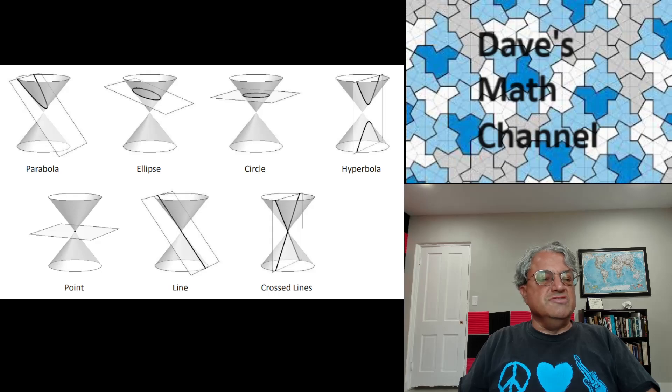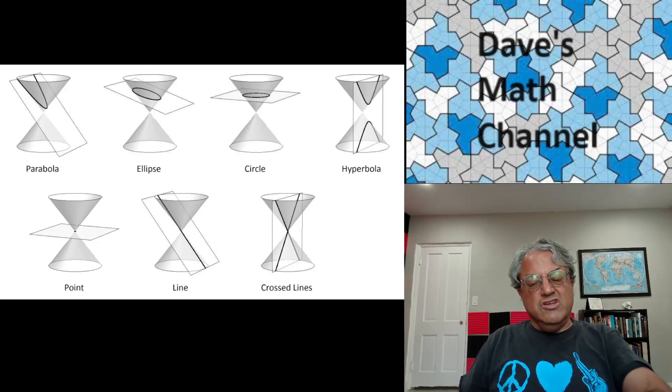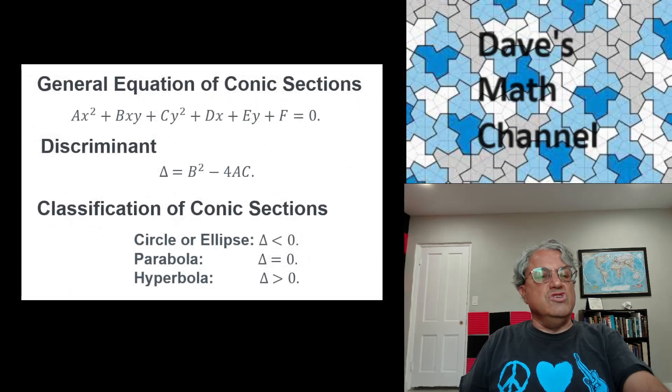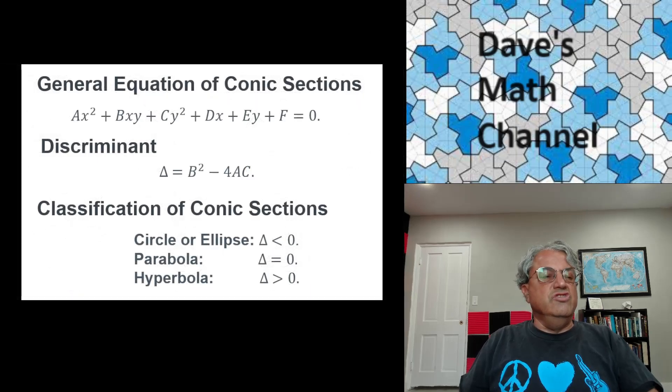Or you can intersect the plane with the cone in such a way that the plane passes through the vertex. And in that case, you get two intersecting lines. But these three degenerate cases are not considered to be conic sections, even though they are really sections of a conic. They don't satisfy quadratic equations. And like I said, a conic section is also called a quadratic equation in two variables.